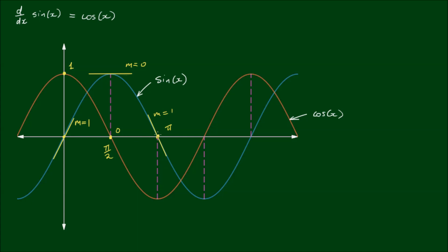At x equals π, cosine has a corresponding value of negative one, which is the same as the slope of negative one of the sine curve at x equals π. At x equals 3π/2, the slope again is equal to zero with a corresponding value on the cosine curve of zero. And when x equals 2π, the slope again is equal to one and cosine of x equals one. So you may infer from this that the derivative of sine of x, which gives us the slope at any value of x, is equal to cosine of x.